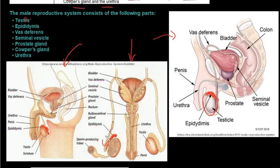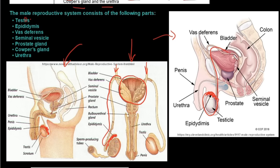Next is the vas deferens, which is a long tube that extends all the way around. The ureters come from the kidneys into the bladder, and the vas deferens loops around that. Its function is very simple: it transports the sperm using peristaltic movements.